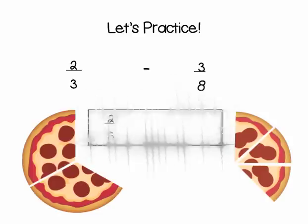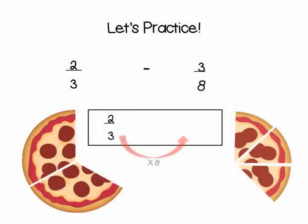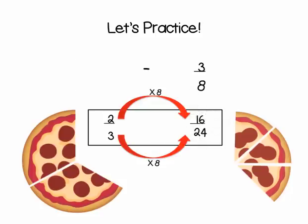Let's start with 2 thirds. We know that 3 goes into 24 8 times. Therefore, we also need to multiply the numerator by 8, and we end up with 16 24ths. That's one fraction.